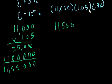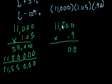So then we have 11,550, and now it's going to decrease by 10%, or we could multiply it by 0.9. 9 times 5 is 45, 9 times 1 is 9 plus 4 is 13, 9 times 1 is 9 plus 1 is 10.